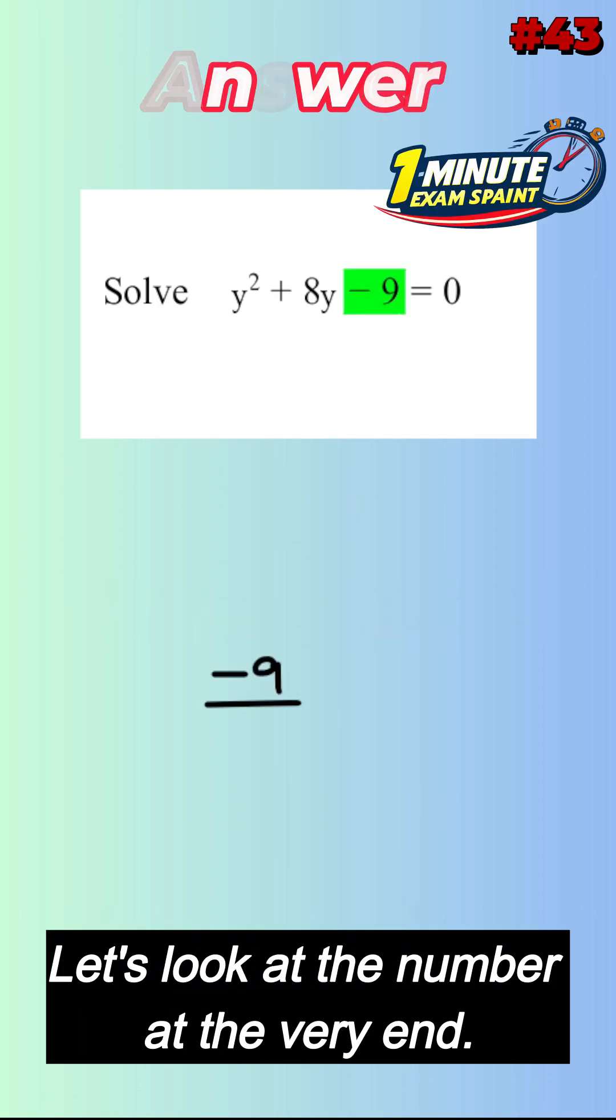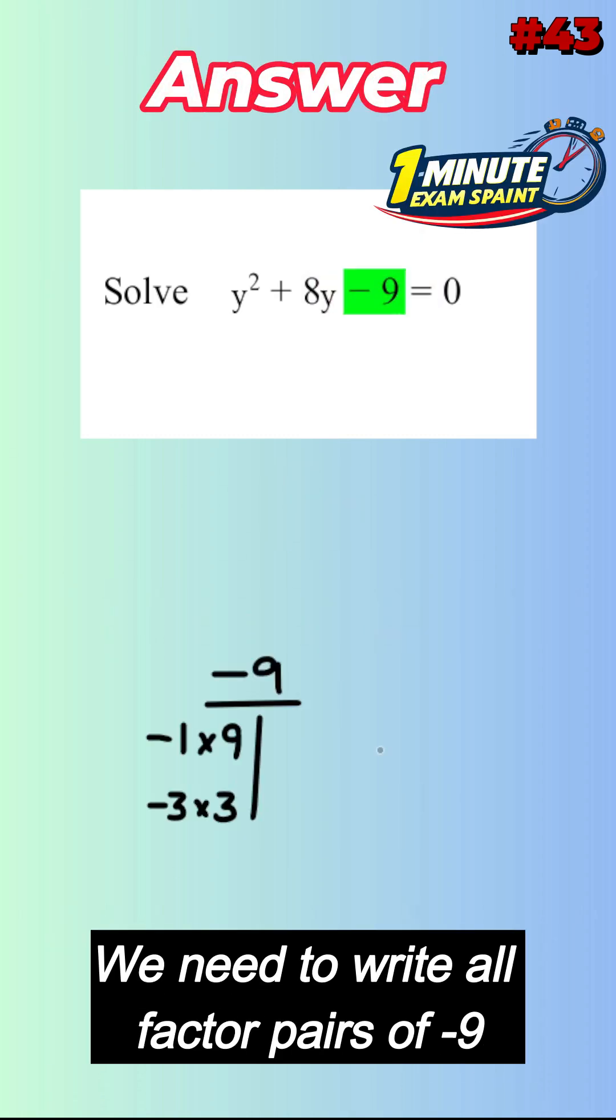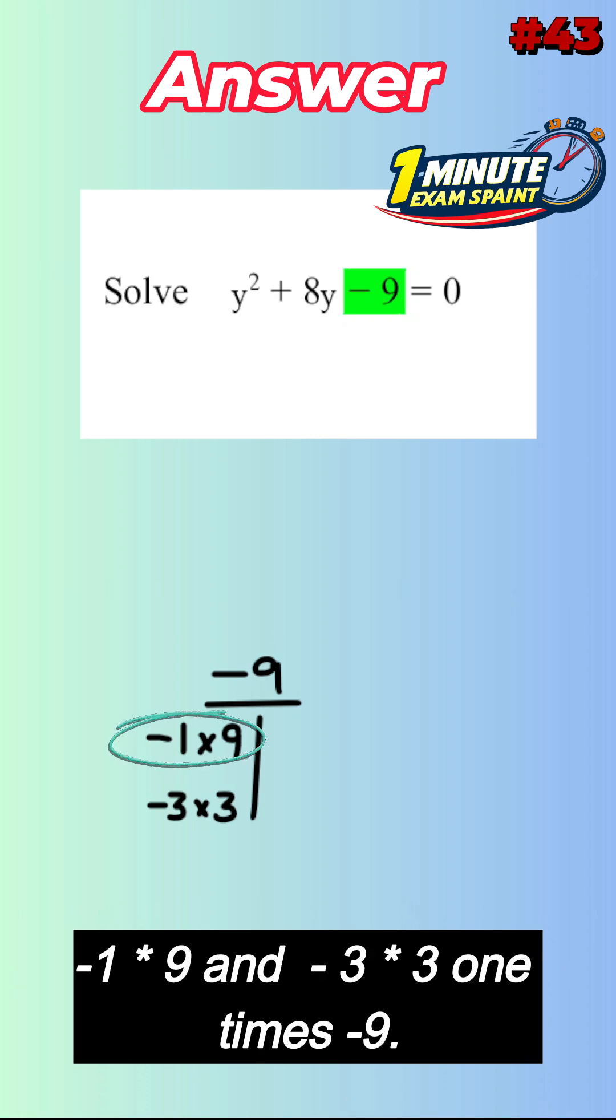Let's look at the number at the very end. We need to write all factor pairs of negative 9: negative 1 times 9, negative 3 times 3, 1 times negative 9.